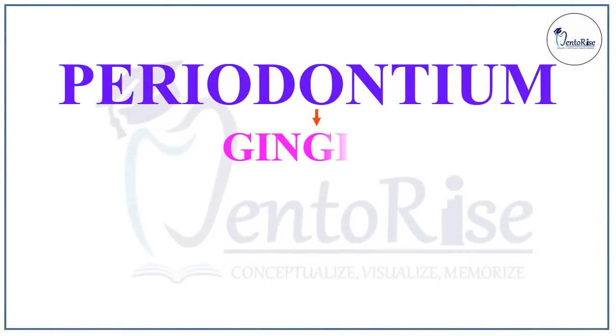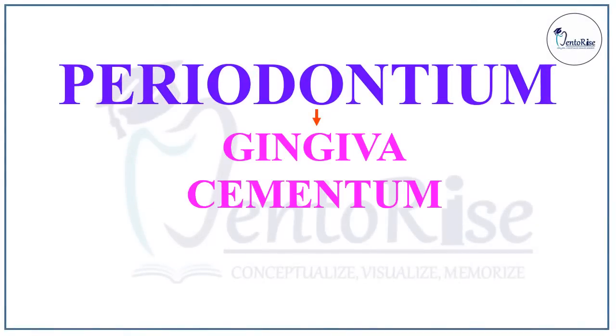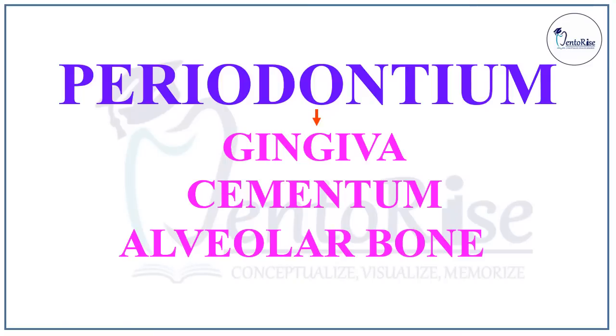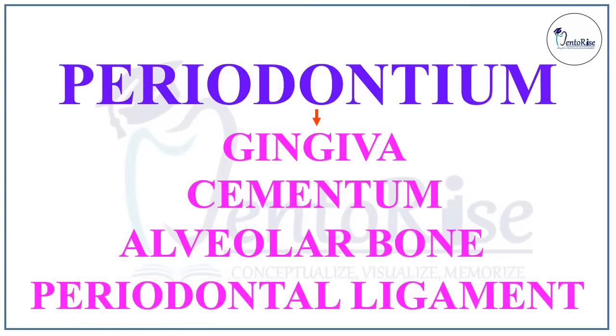Periodontium comprises of gingiva, cementum, alveolar bone and the periodontal ligament. In this video we will be starting with the gingiva and will be mainly covering the types of gingiva.